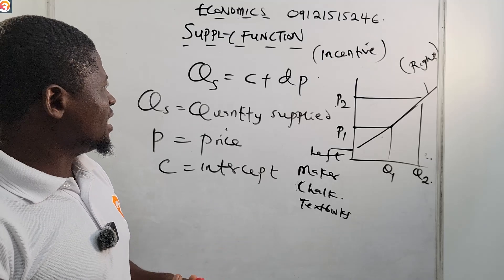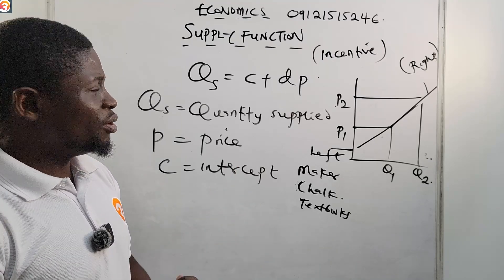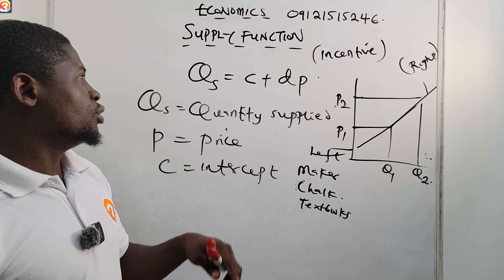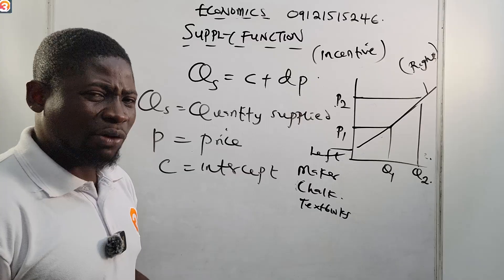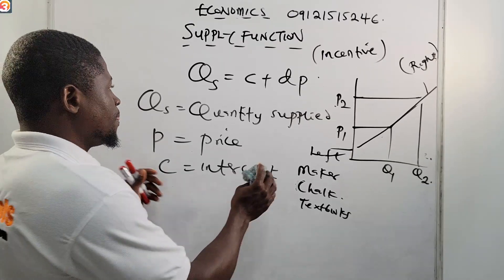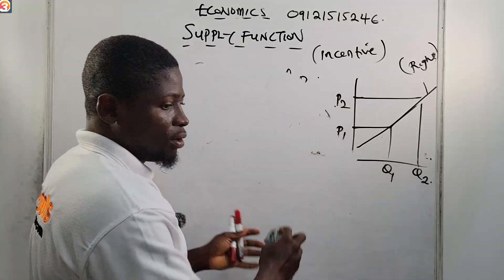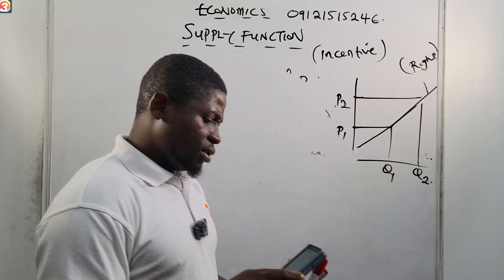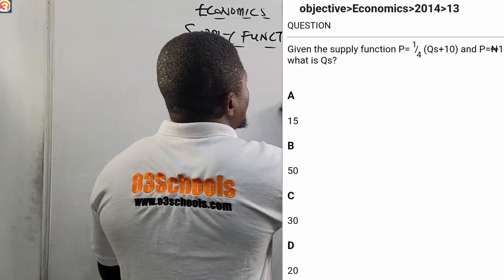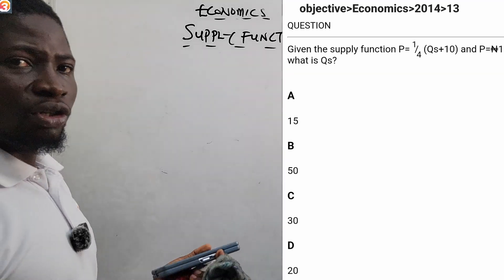Now let us go to the O3 School JAMB app and answer the question we have before us. We do not want to waste time — let's answer the JAMB past question. The question before us from the app is the 2014 question number 13 that we read out at the start. It says: given the supply function P equals 1 over 4 QS plus 10.